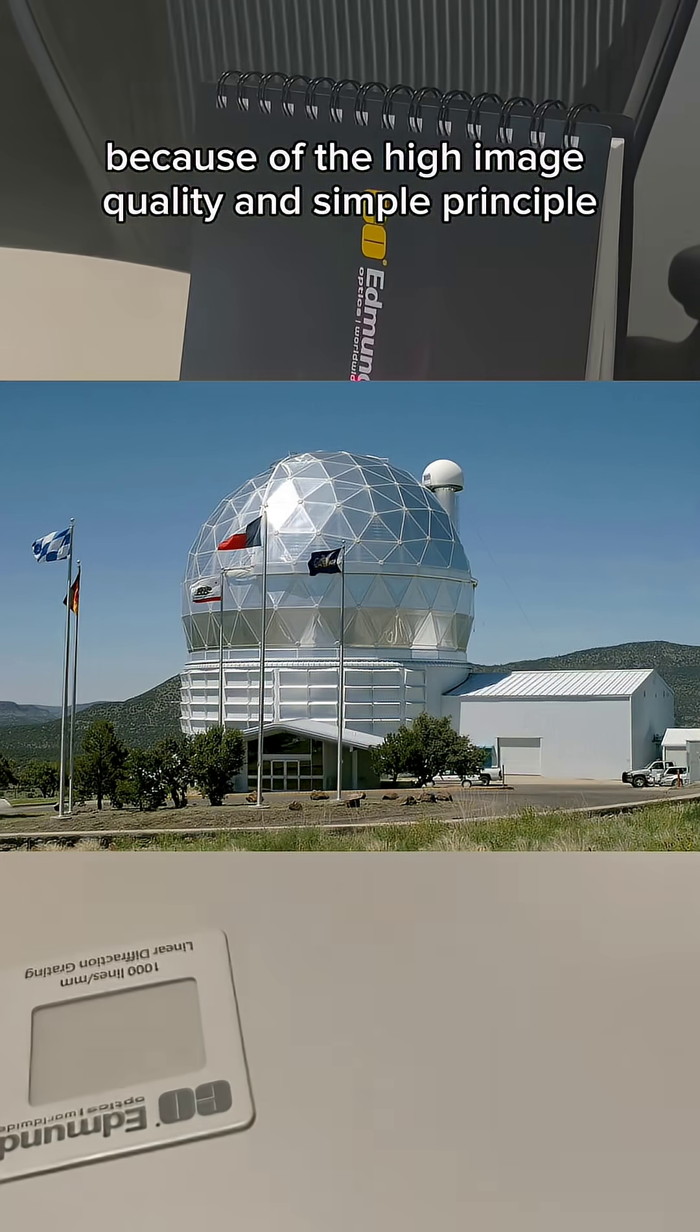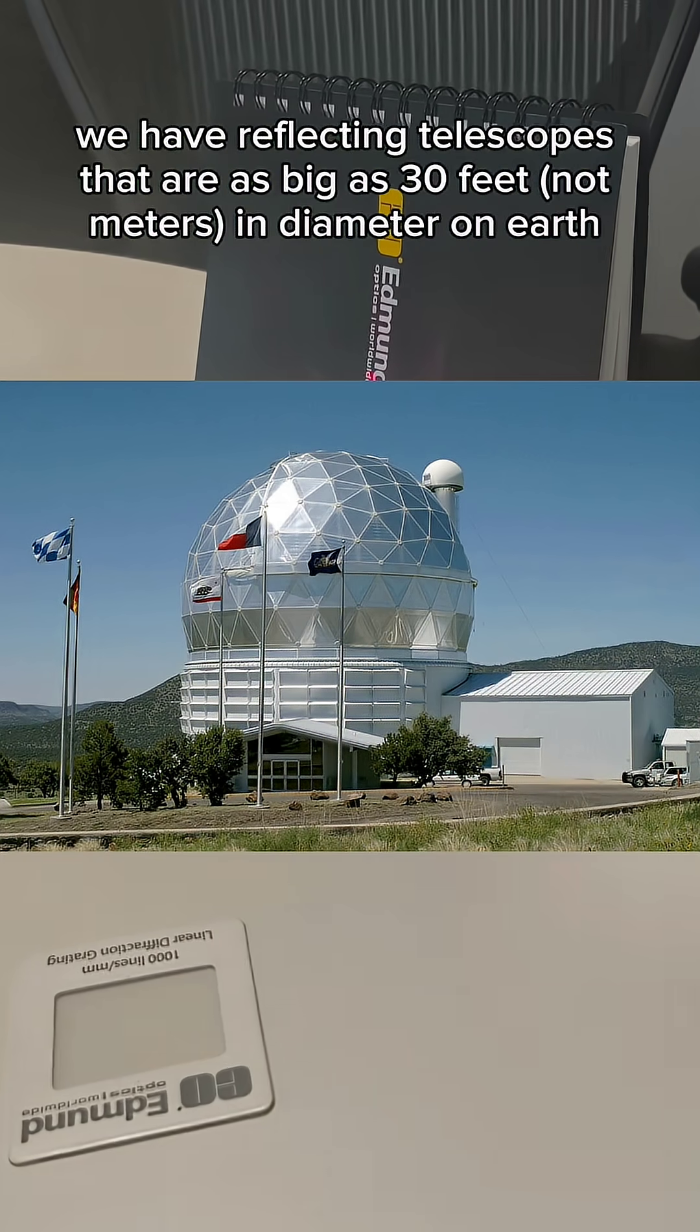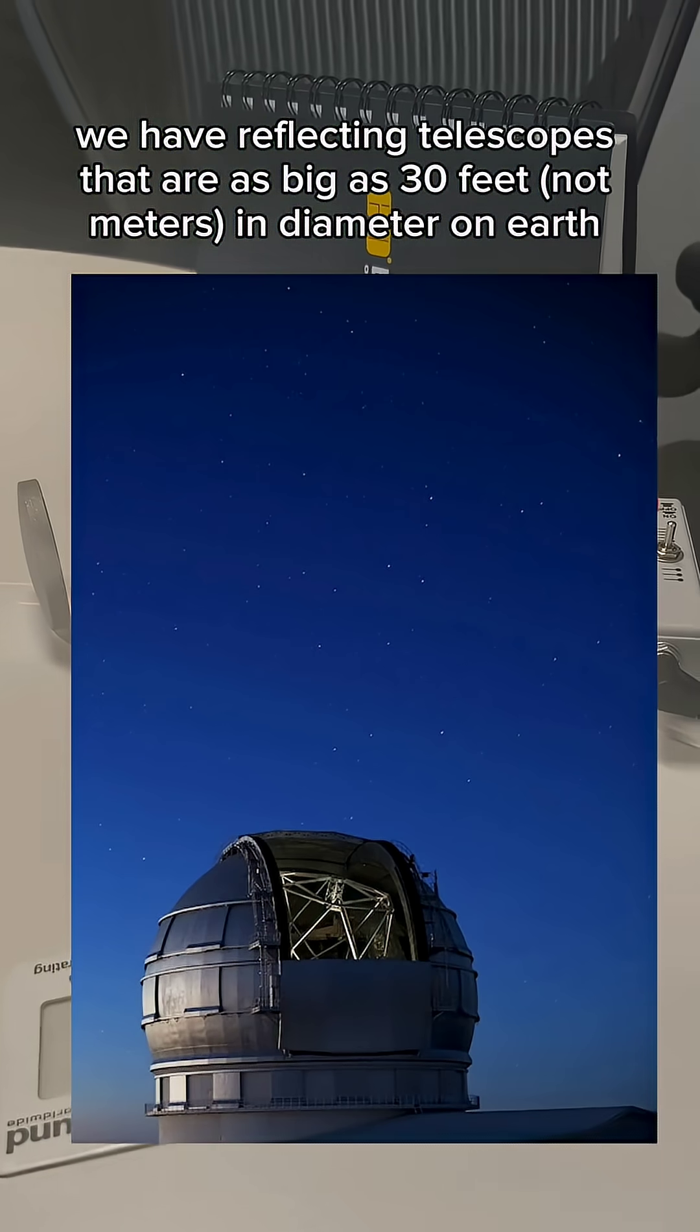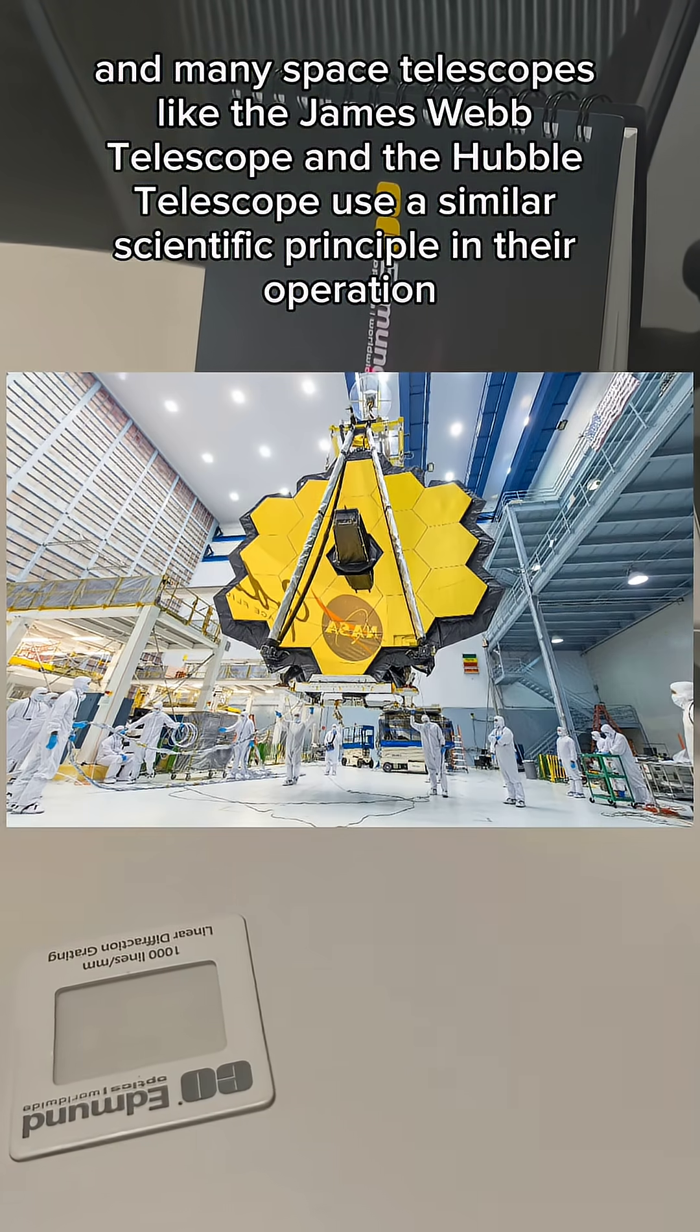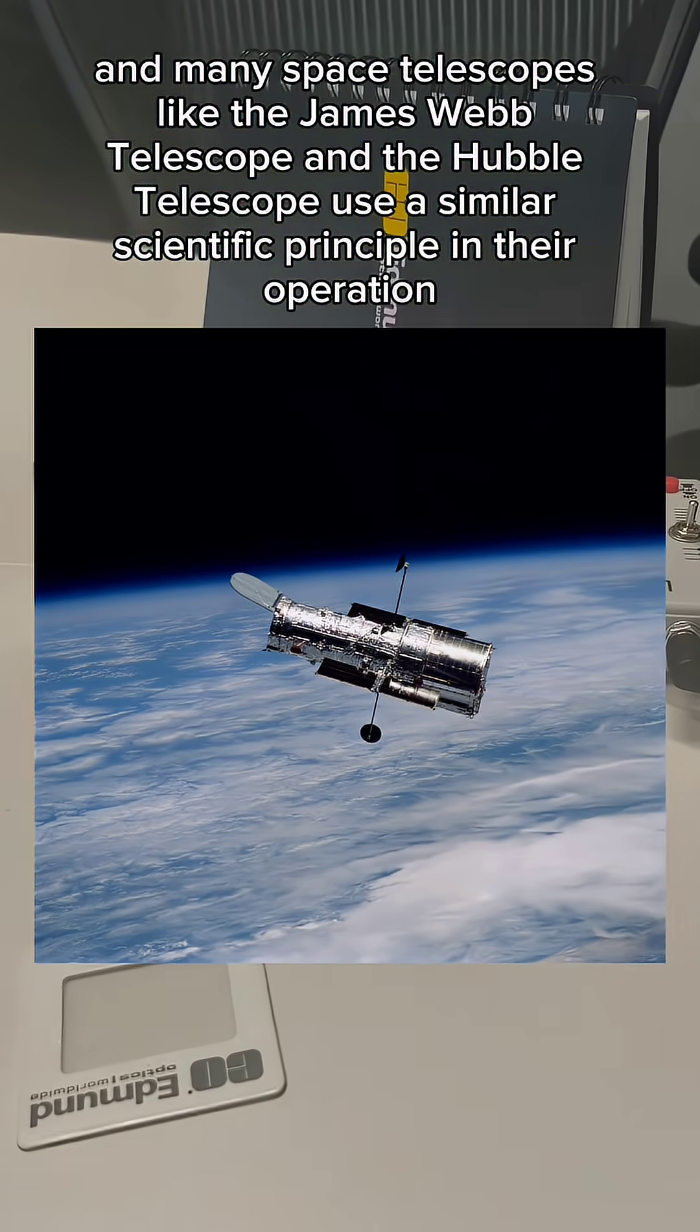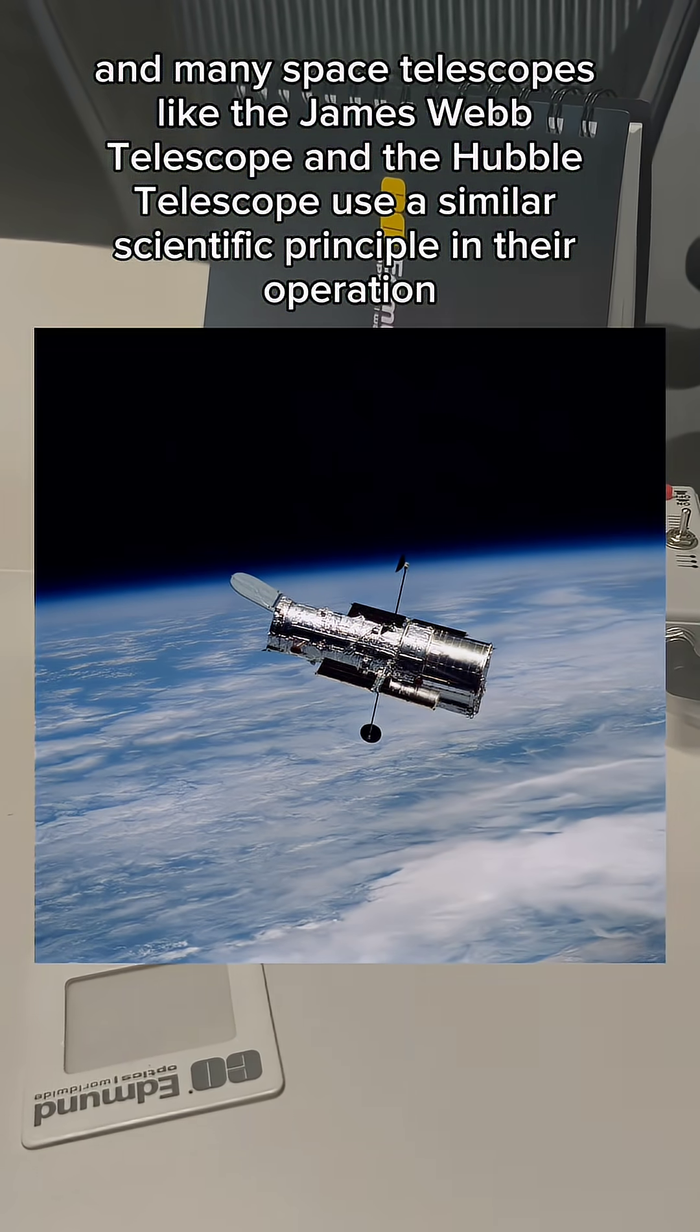Because of the high image quality and simple principle, we have reflecting telescopes as big as 30 meters in diameter on Earth. Many space telescopes like the James Webb Telescope and the Hubble Telescope use a similar scientific principle in their operation.